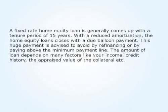A fixed rate home equity loan generally comes with a 10-year or 15-year period. With a reduced amortization, the home equity loan closes with a due balloon payment. This large payment is advisable to avoid by refinancing or by paying above the minimum payment line. The amount of the loan depends on many factors like your income, credit history, and the appraised value of the collateral.